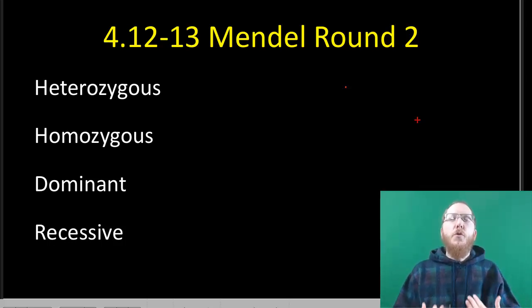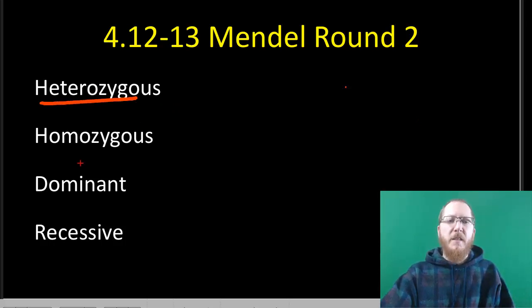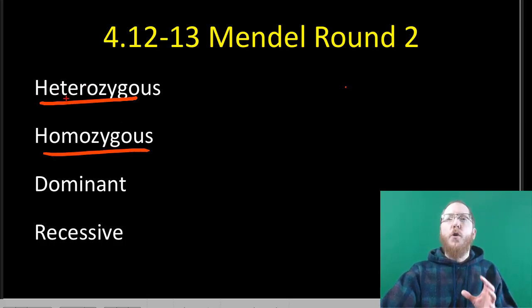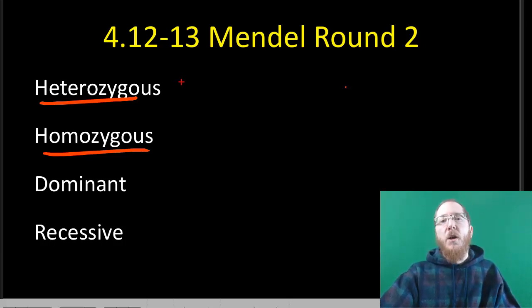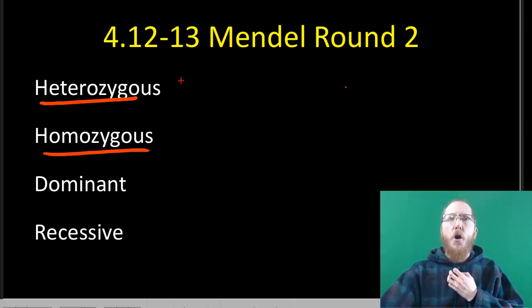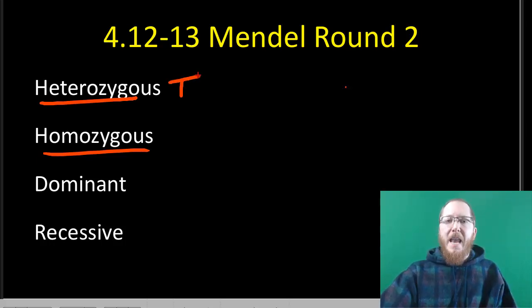The terminology we use to describe these organisms comes down to the idea of heterozygous and homozygous. Hetero means different, so any organism is a heterozygote for a particular trait if it has one of each of the alleles — one of each of the possibilities. If I cross a plant that always gives a tall allele with one that always gives a short, you end up with an individual with one tall and one short — a heterozygote. They're different.